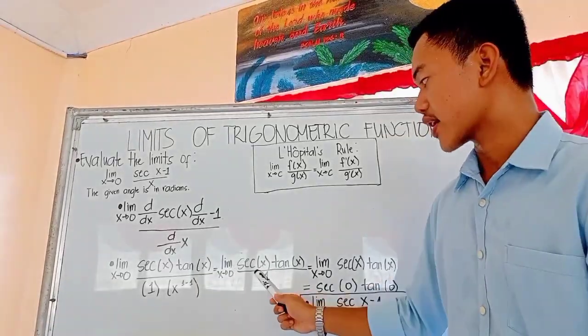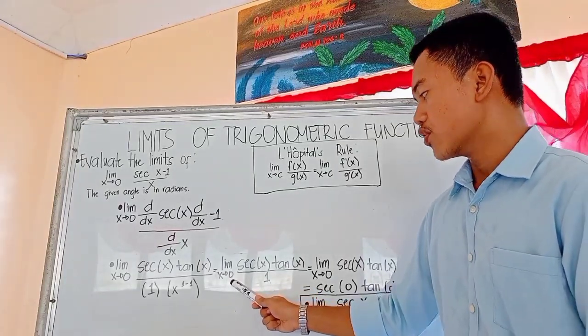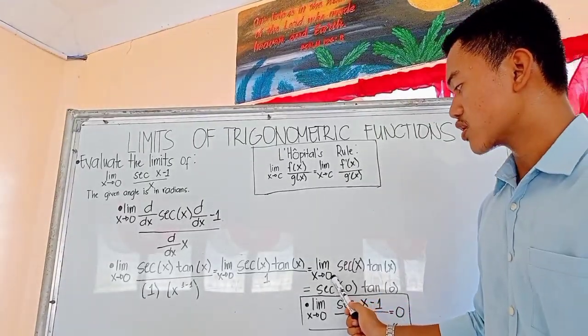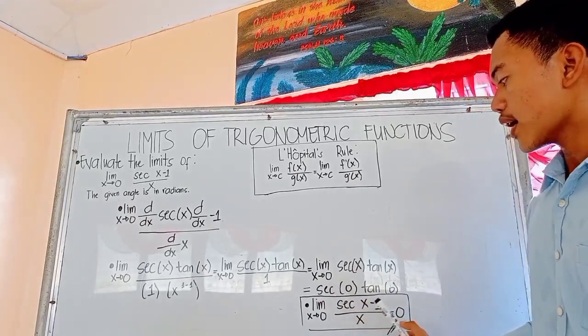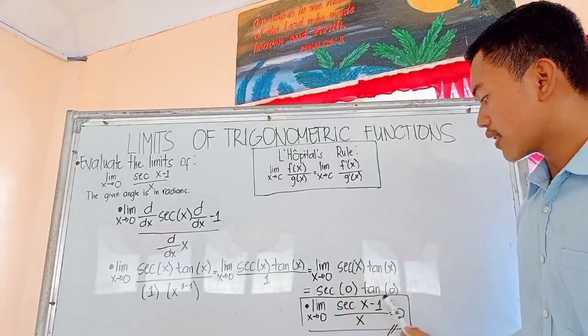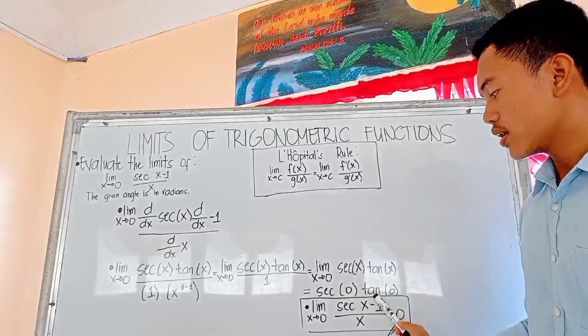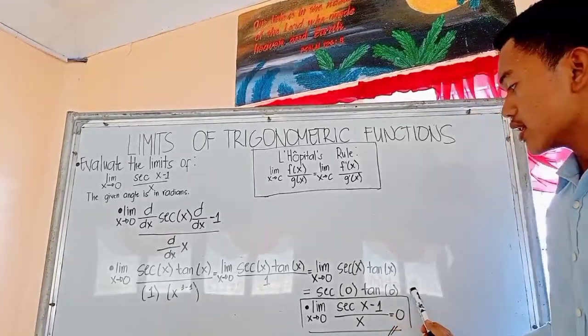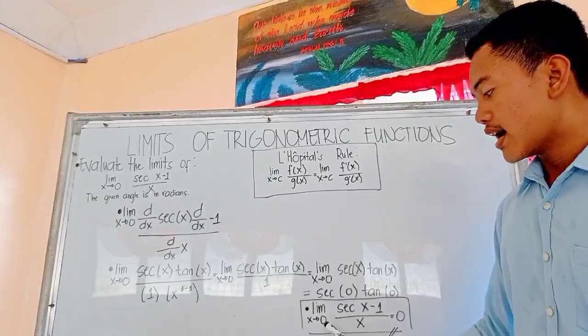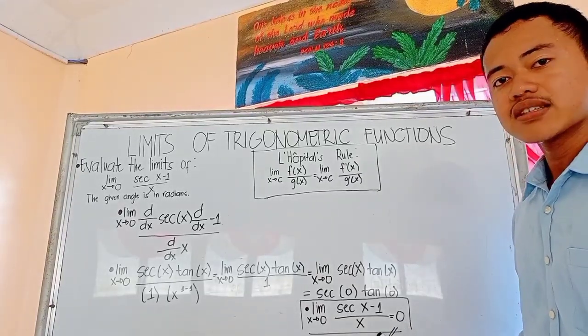So the limit of secant of x tangent of x all over 1 as x approaches to 0. So we rewrite this as limit of secant of x tangent of x as x approaches to 0. So here, we can now substitute the value of x, which is 0. So secant of 0 tangent of 0. Secant of 0 is 0 and tangent of 0 is 0 also. So 0 times 0 equals 0. So the limit of secant of x minus 1 all over x as x approaches to 0 equals 0. So this is our final answer.